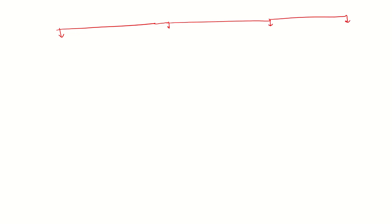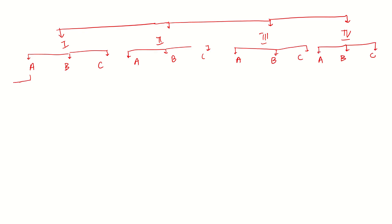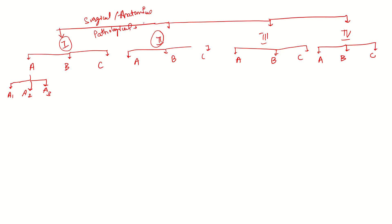FIGO staging is divided into four stages: 1, 2, 3, and 4, each further subdivided into A, B, and C. Stage 1A is further subdivided into A1, A2, and A3. Stages 1 and 2 are surgical or anatomical classifications based on imaging like MRI or CT scan, or after staging laparotomy, and also include histological grading. Stages 3 and 4 are purely surgical or anatomical classifications and do not consider histology.